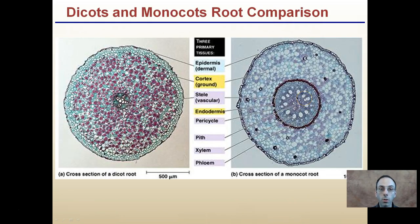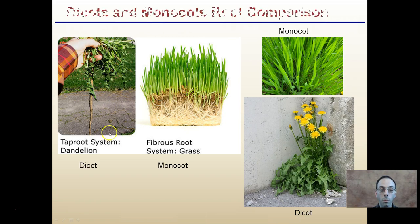Bringing that to a real-world root comparison now: the dicots have this kind of central key portion that almost looks like a T or an X, and monocots have this kind of internal ring structure to their root system. Remember, monocots are going to be more fibrous, and dicots are going to be more of a central taproot system.